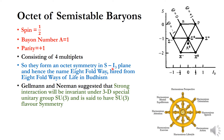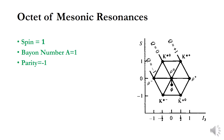The name is borrowed from the Eightfold Way of life in Buddhism — the eight fundamental principles of Buddhism. Gell-Mann and Ne'eman suggested that the strong interaction is invariant under the three-dimensional unitary group SU(3) and is said to have SU(3) flavor symmetry. There is also another octet of mesonic resonances.